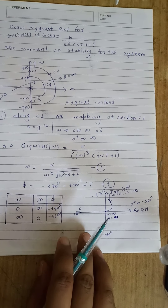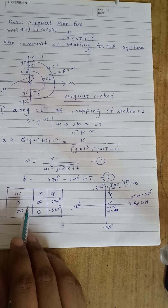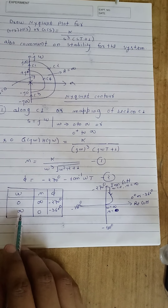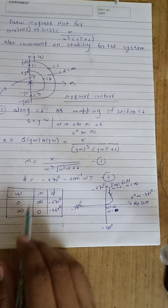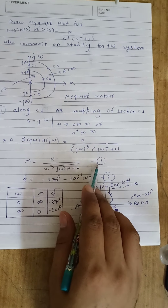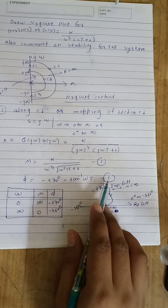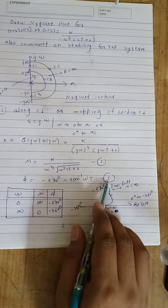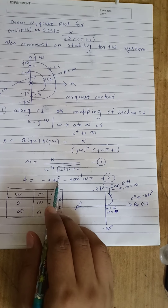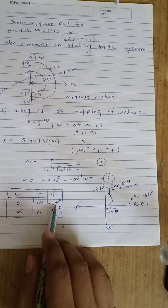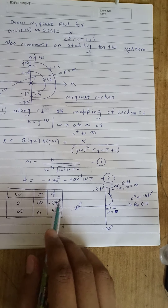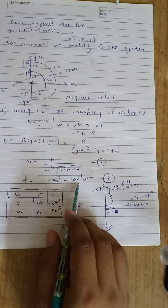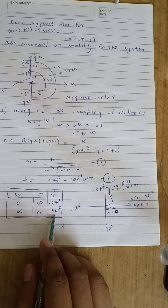For omega equal to zero, we have magnitude infinity from the first equation. For omega equal to infinity, we have magnitude zero. Similarly, for omega equal to zero, the phase angle is minus 270 degrees, and for omega equal to infinity the phase angle is minus 270 minus 90, which means minus 360 degrees.